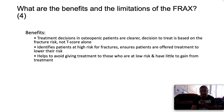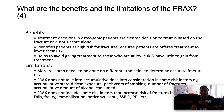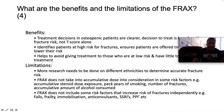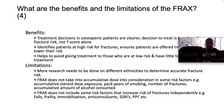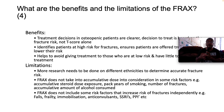What are the benefits and limitations of FRAX? Benefits: treatment decisions are based on a composite score rather than T-score alone, allowing more accurate decisions. It identifies patients at high risk for fractures, ensures treatment is offered to reduce fracture risk, and helps avoid treating those at low risk. Limitations: more research is needed on different ethnicities. FRAX does not account for cumulative doses in some risk factors — such as cumulative steroid dose, pack-years of smoking, number of fractures, or cumulative alcohol. It also excludes independent risk factors like falls, frailty, immobilization, anticonvulsants, SSRIs, and PPIs.